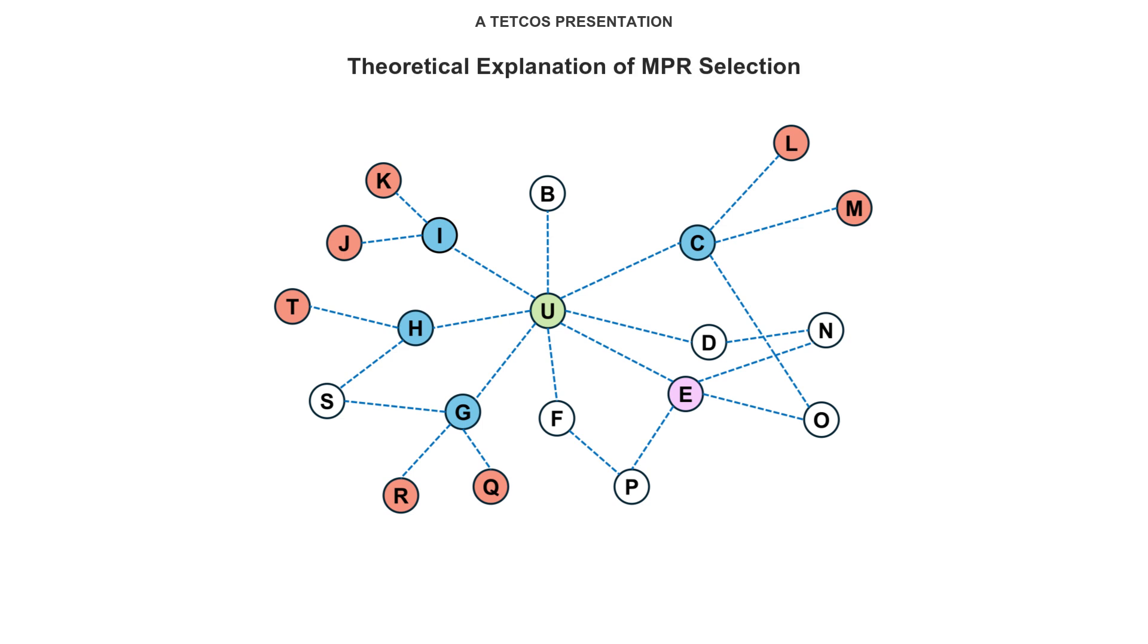From theory, the MPR selection occurs in two stages. In the first stage, MPR nodes are selected to cover the isolated nodes in the 2 hop neighbor set of node U, such as nodes J, K, T, R, Q, L, and M. Nodes I, H, G, and C are chosen as MPRs during this step to ensure these isolated 2 hop neighbors are covered.